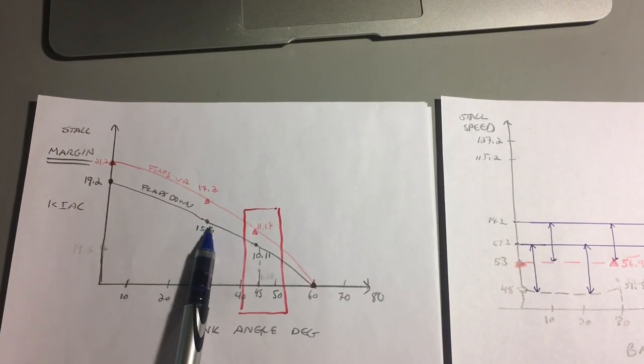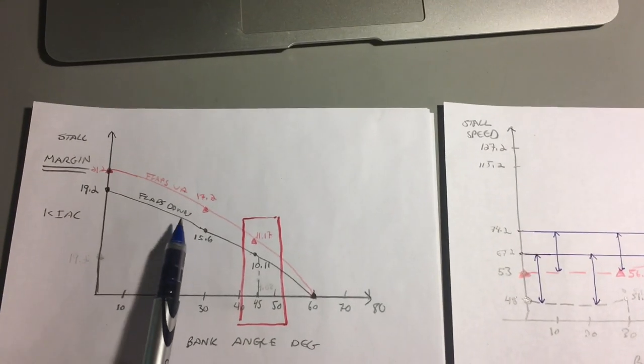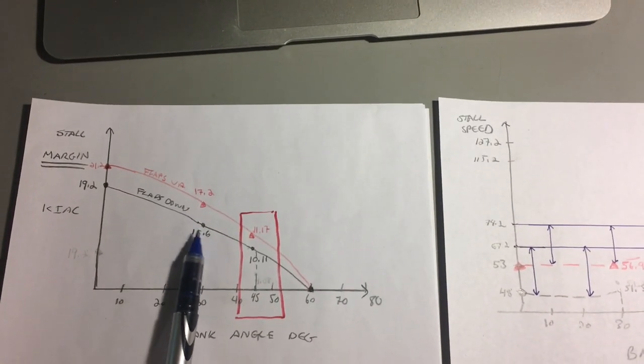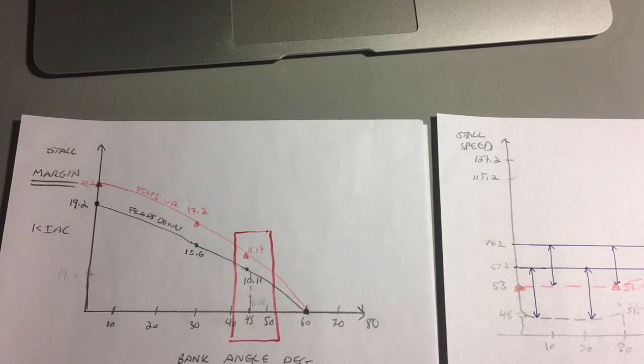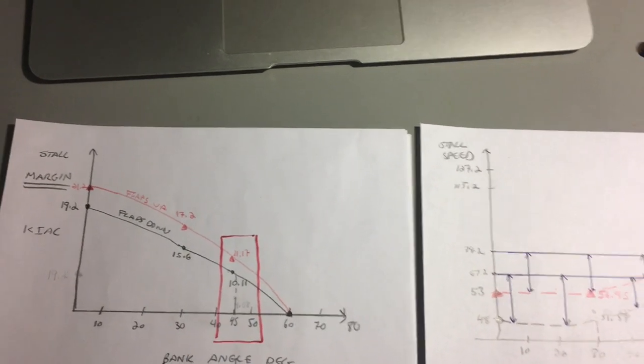Another interesting thing this graph shows is that you have less margin of safety when the flaps are down as opposed to when the flaps are up. So keep that in mind the next time you're flying.